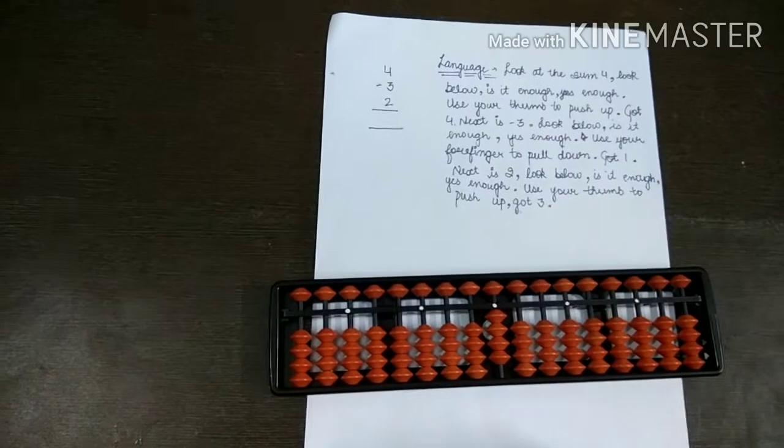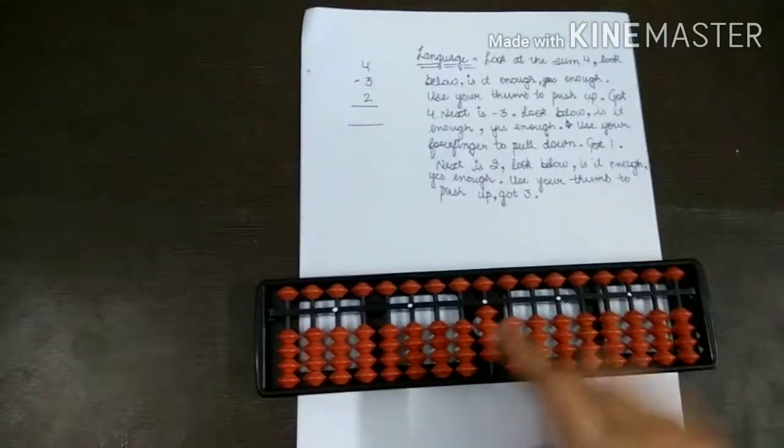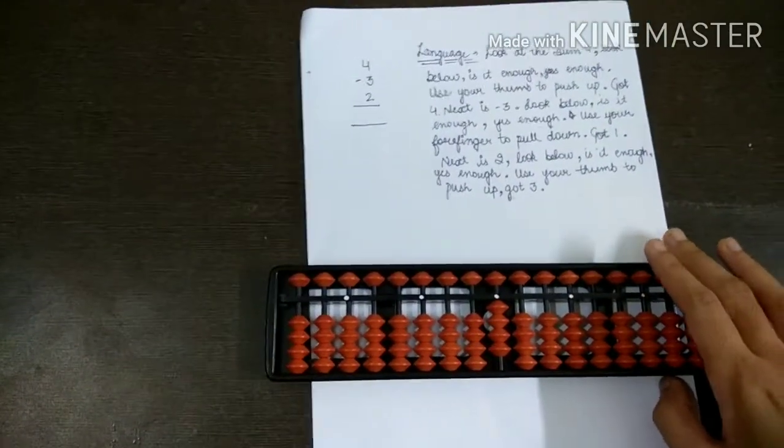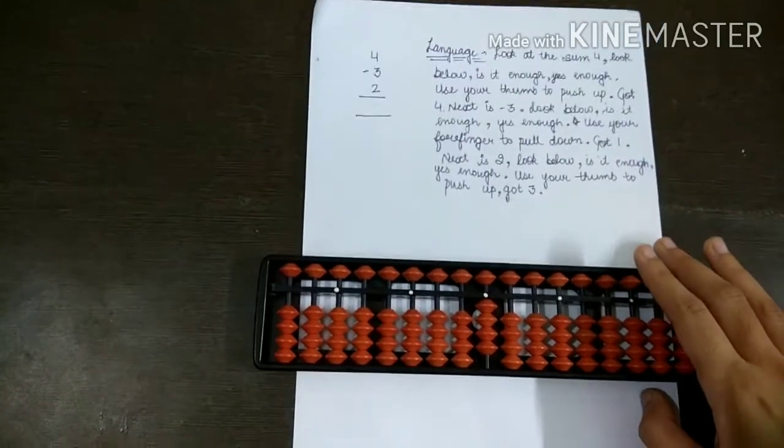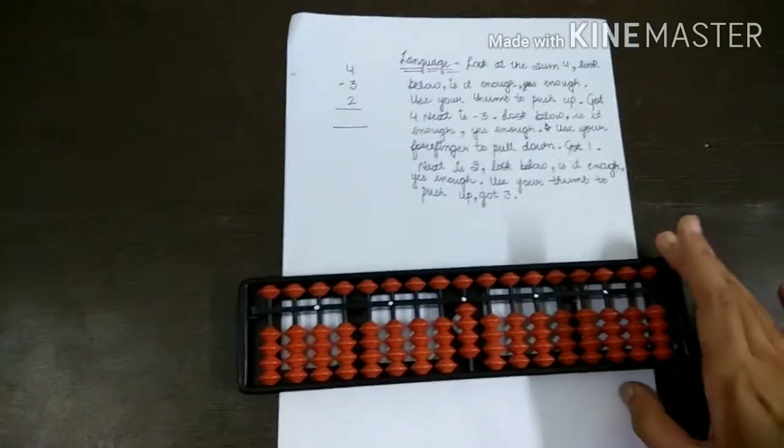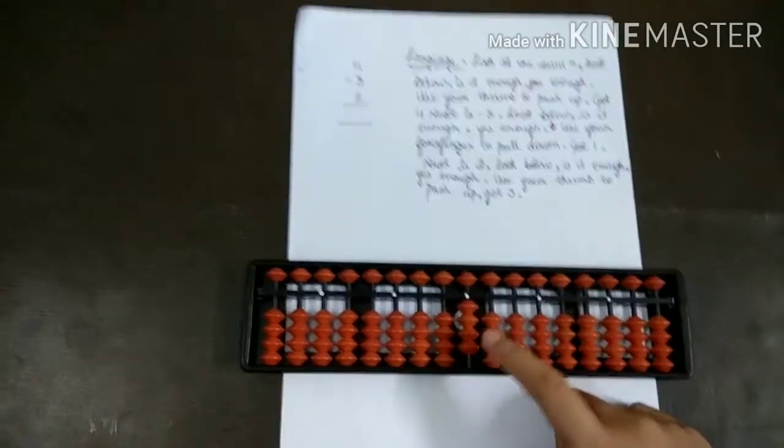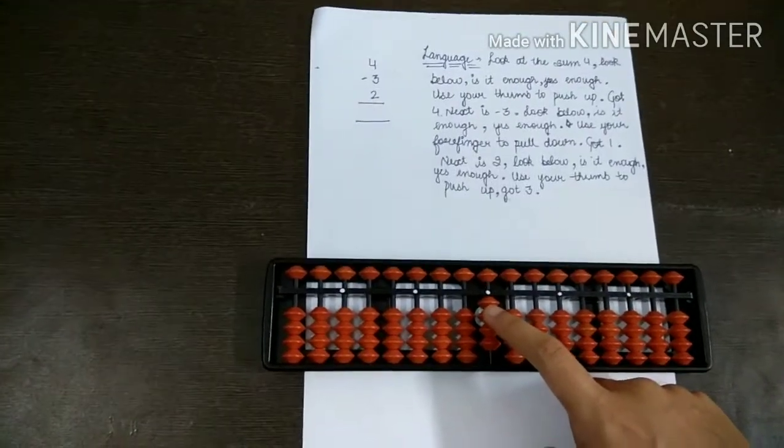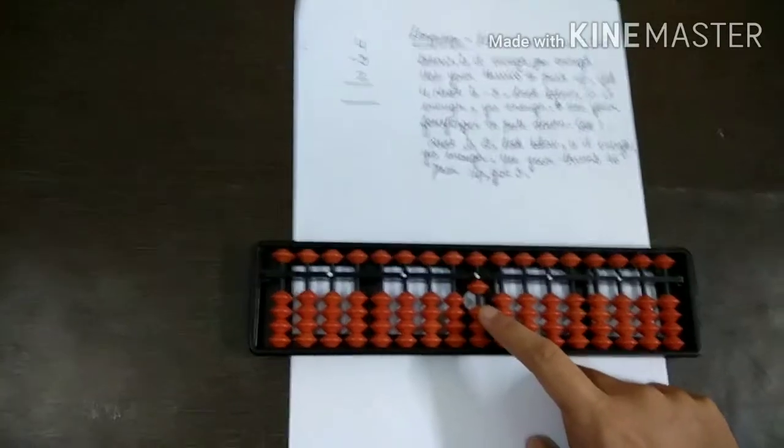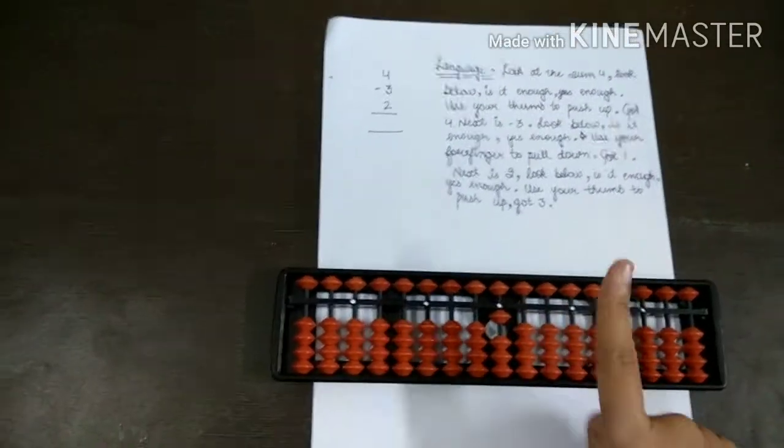Next is minus 3. Look below. Is it enough? We can minus 3 here. Of course. Yes, it is enough. Use your forefinger to pull down. Got 1.